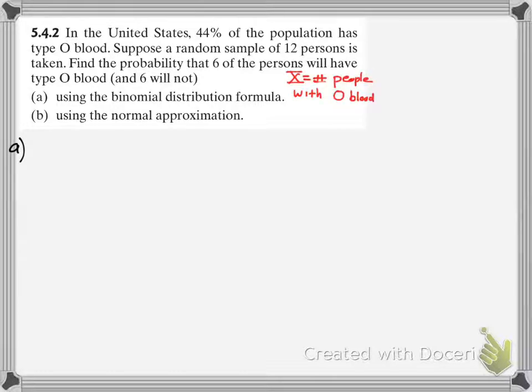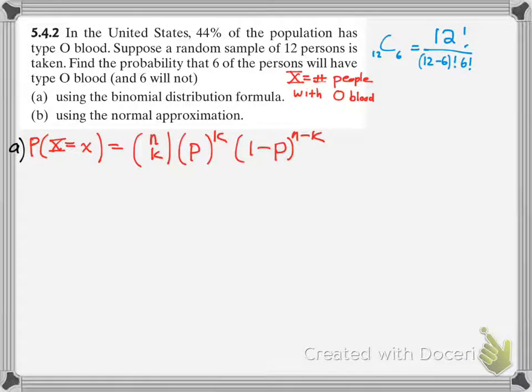We're going to let capital X, I put what it looks like, kind of like Roman numeral 10, equal the number of people with type O blood. So, you define your variable, and that's going to be for later. And this is just the formula for the binomial distribution.